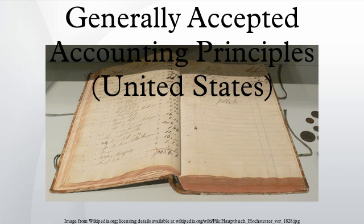Principles: The Historical Cost Principle requires companies to account and report based on acquisition costs rather than fair market value for most assets and liabilities. This principle provides information that is reliable but not very relevant. Thus there is a trend to use fair values; most debts and securities are now reported at market values. The Revenue Recognition Principle holds that companies may not record revenue until it is realized or realizable and when it is earned. The flow of cash does not have any bearing on the recognition of revenue; this is the essence of accrual basis accounting.